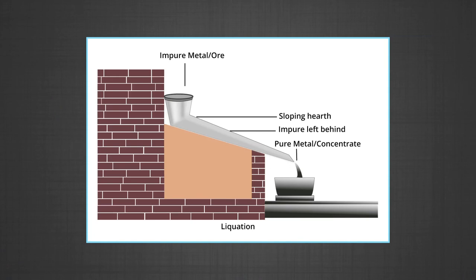The impure metal is made to flow on a sloping hearth of a furnace and gently heated in an inert atmosphere, that is absence of oxygen. The impurities which are less fusible than the metal are left behind on the top of the hearth, whereas the fusible metal flows down.